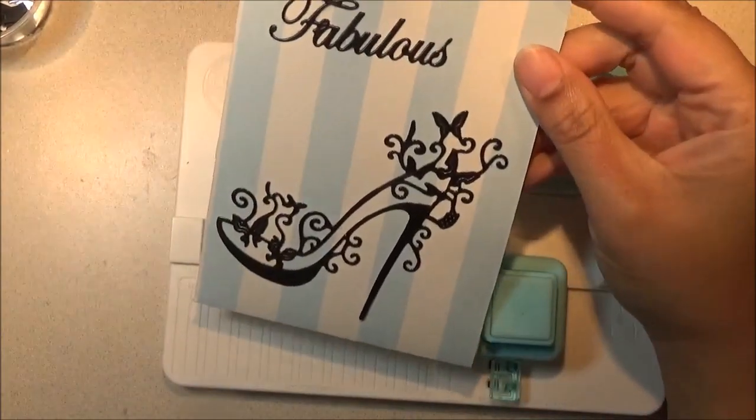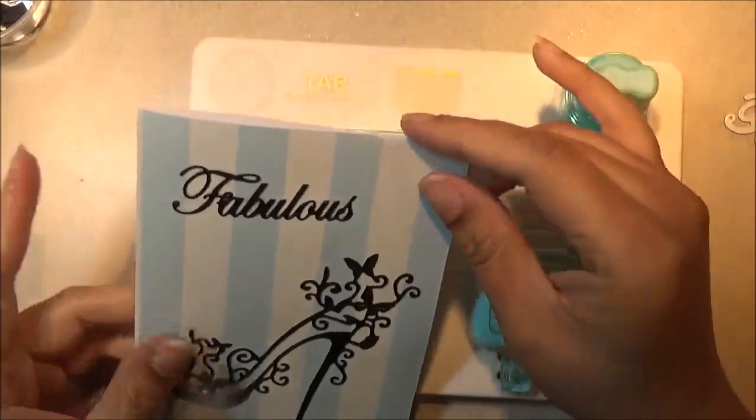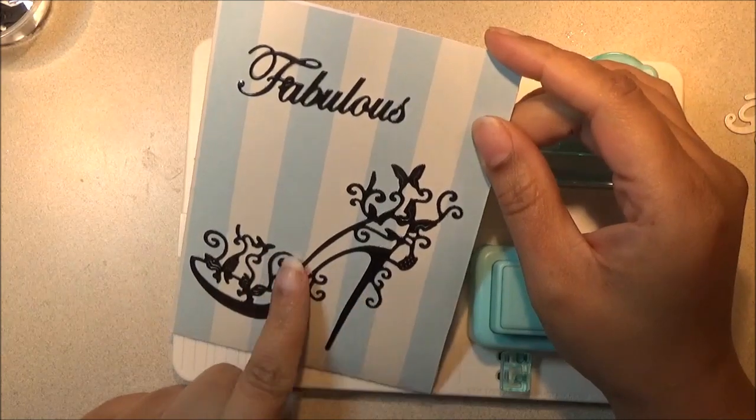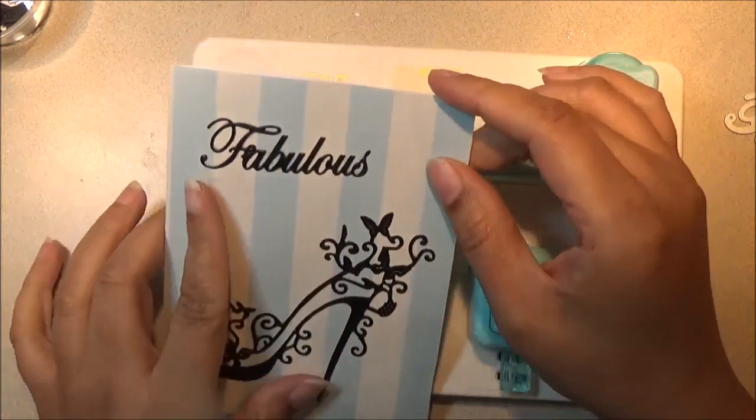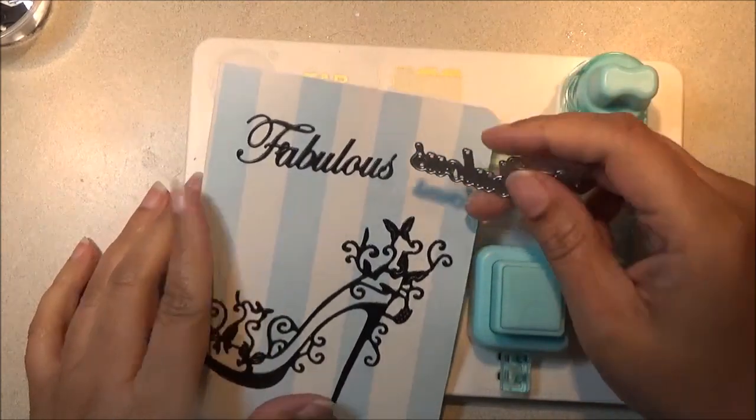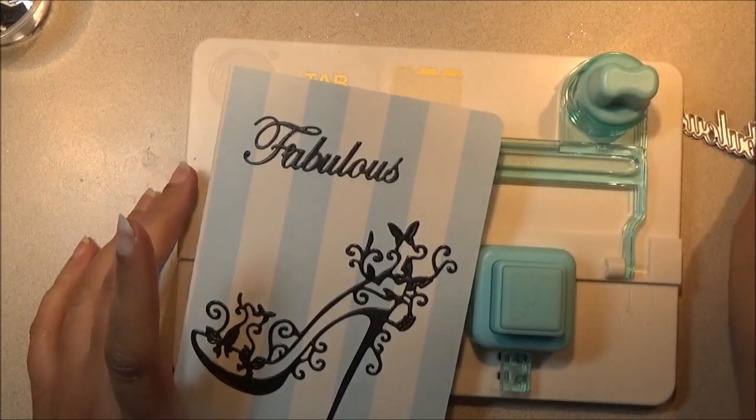Here's the finished pocket folder. I did decorate it. I used the tab punch board to punch it out as you know. And I used the tattered lace shoe die. I used the fabulous die from the crafters companion. I did a haul about a month ago and that's where that came from.